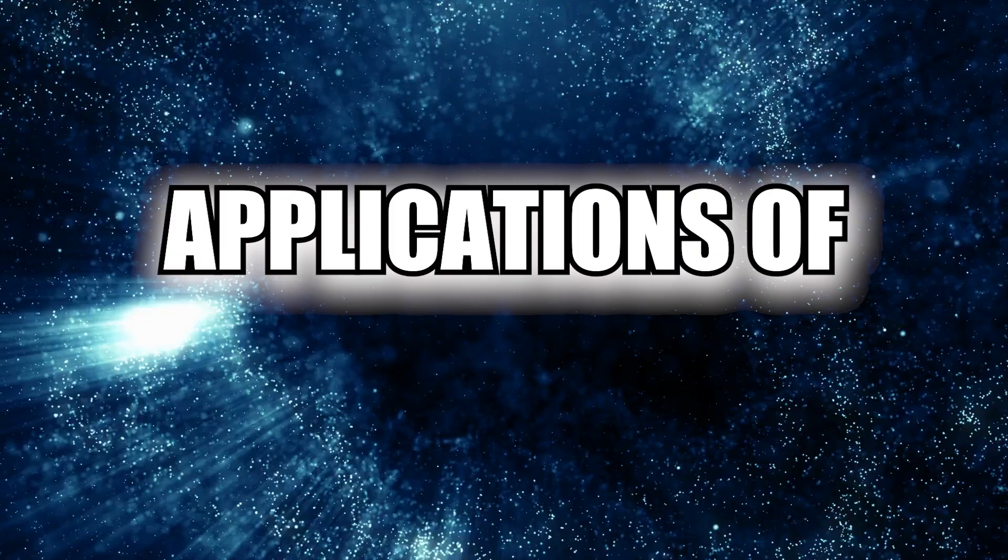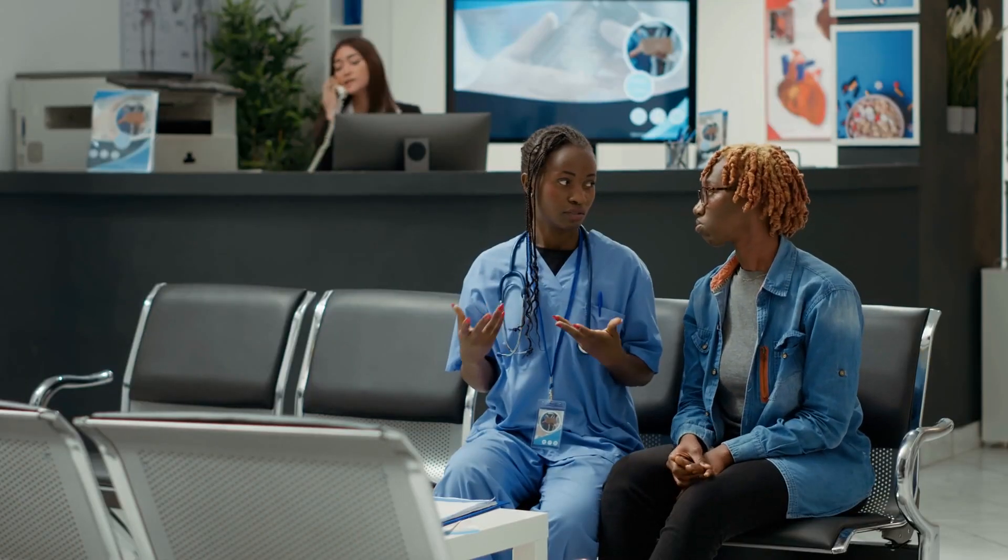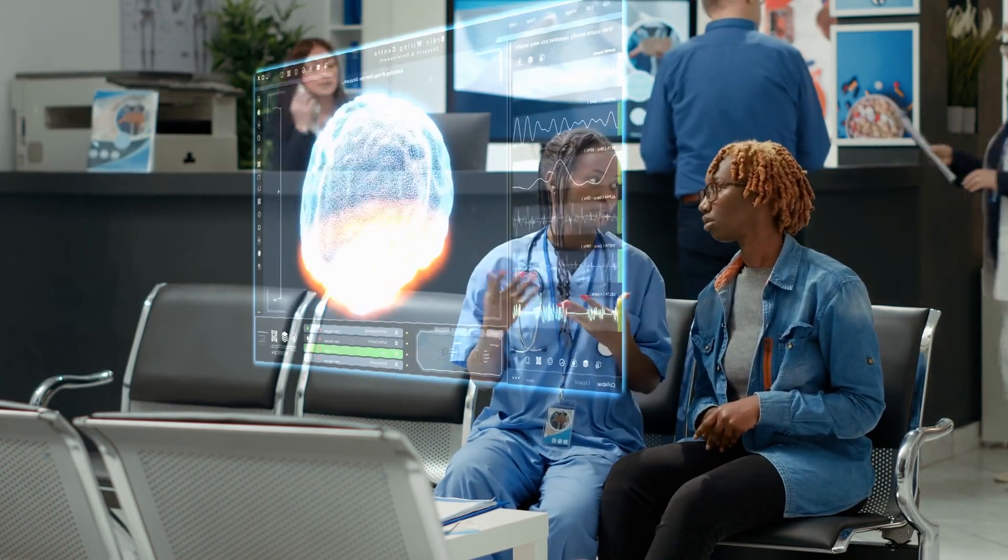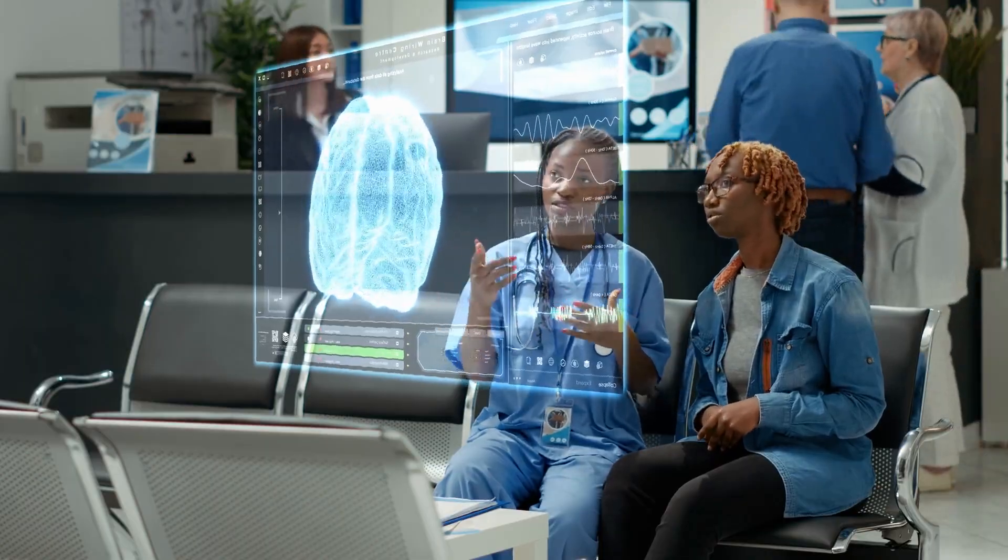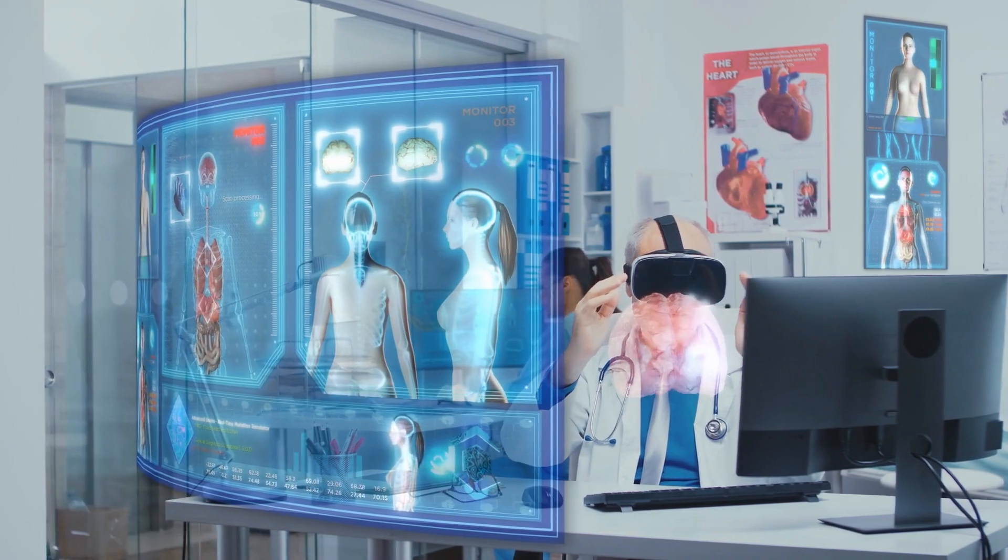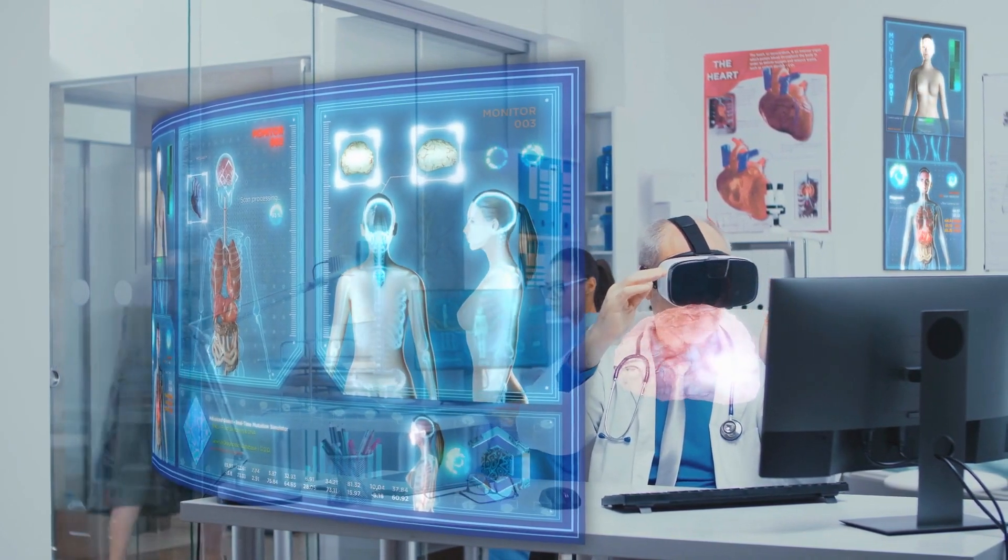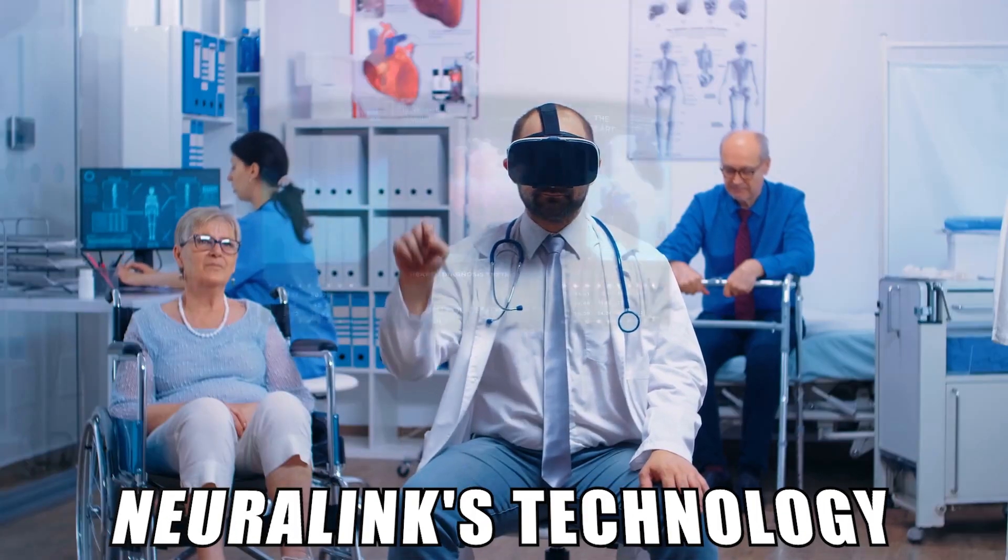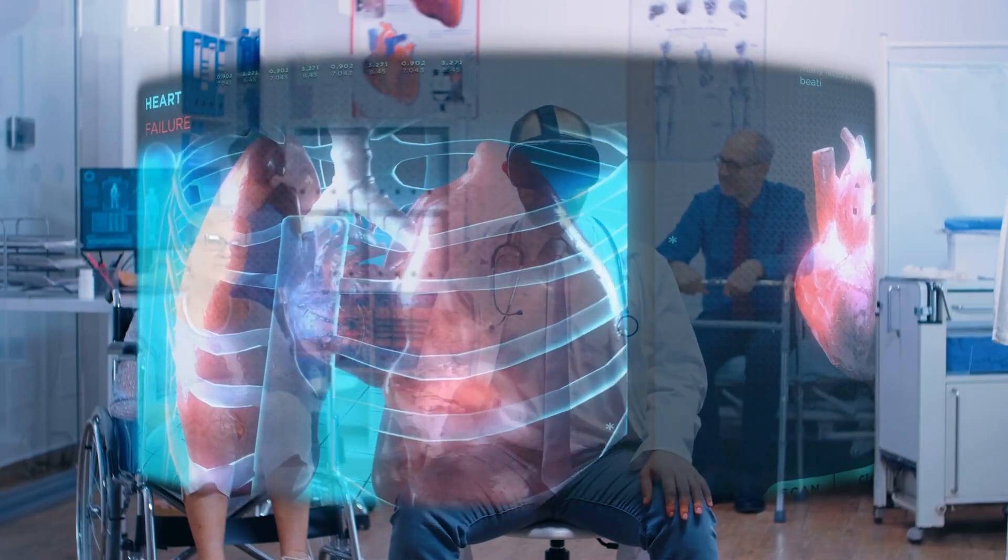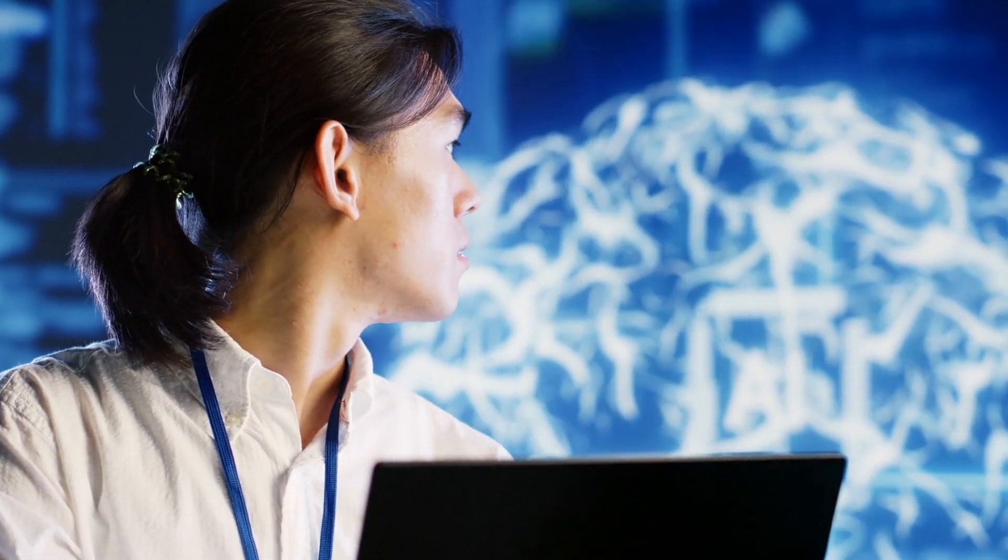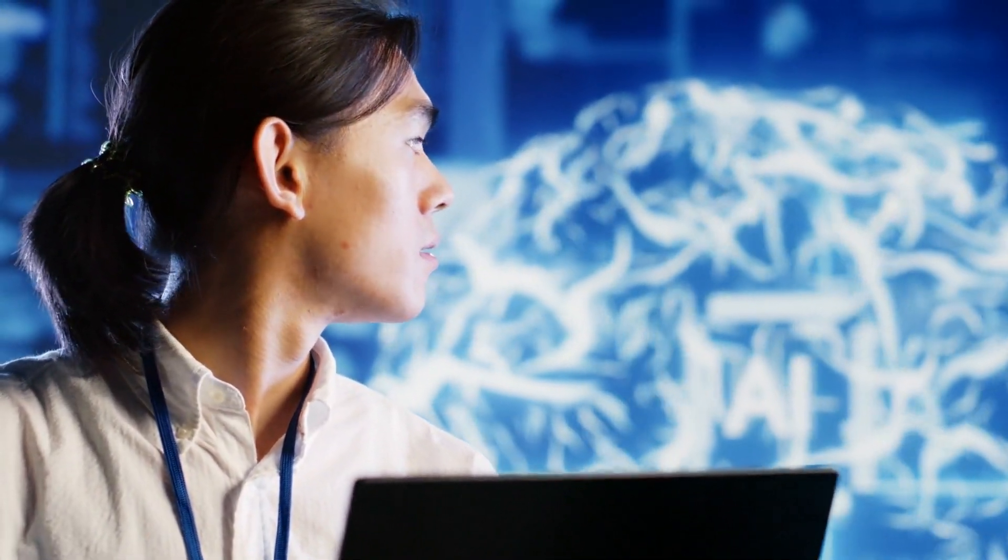Applications of Neuralink. The potential applications of Neuralink span a wide spectrum of fields, from healthcare to communication and beyond, offering transformative solutions to some of humanity's most pressing challenges. One of the most promising avenues lies in the realm of healthcare, where Neuralink holds the key to revolutionizing the treatment of neurological disorders. By directly interfacing with the brain's neural circuits, Neuralink's technology offers new hope for individuals suffering from conditions such as Parkinson's disease, epilepsy, and spinal cord injuries. Through precise stimulation of targeted brain regions, Neuralink has the potential to restore lost functionalities and improve the quality of life for millions around the world.